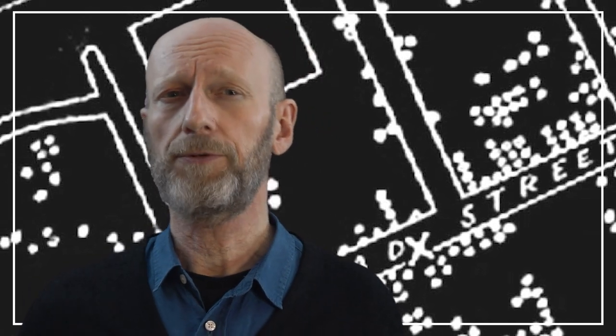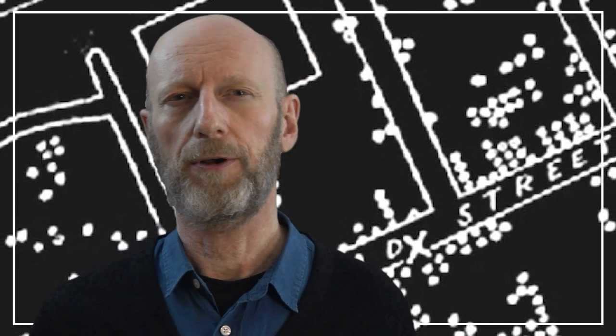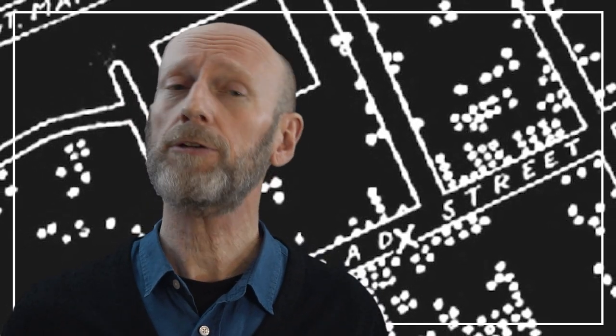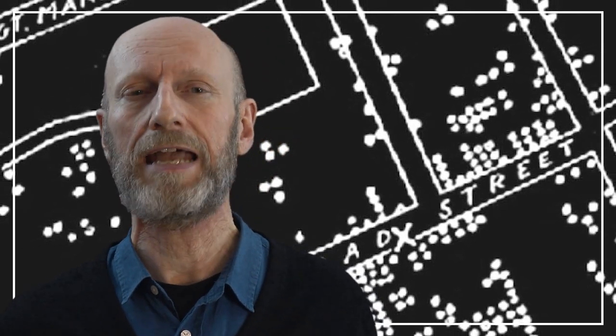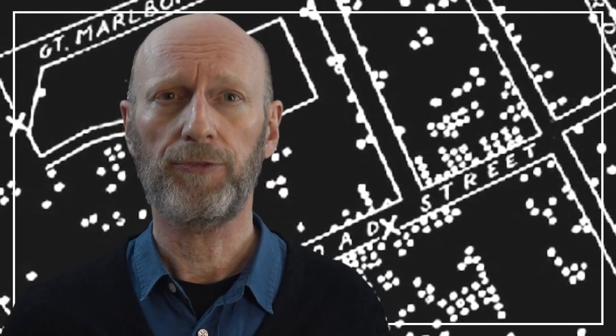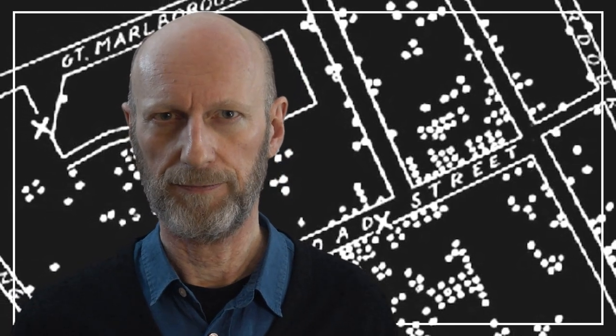In the introduction to this unit of our MOOC on Geographic Information Systems, we started with what may be the first known case of systematic georeferencing of data, carried out by John Snow in the mid-1800s in London's Soho.